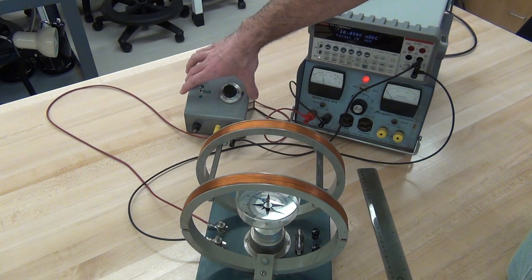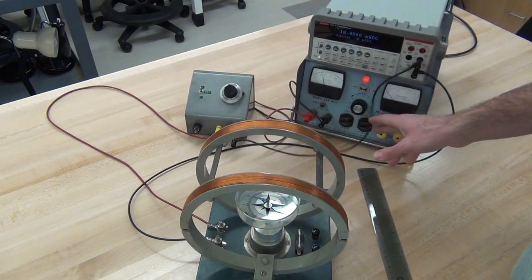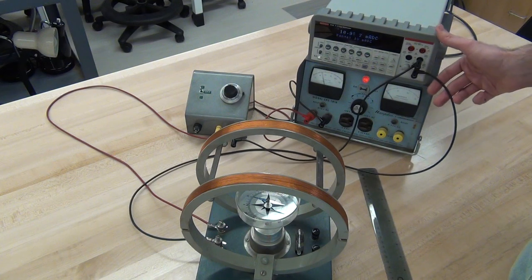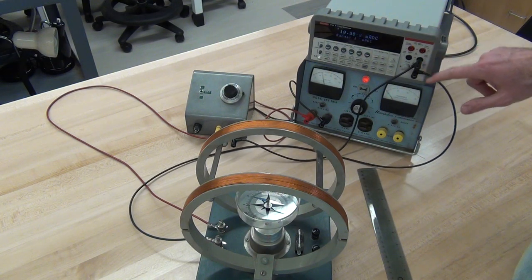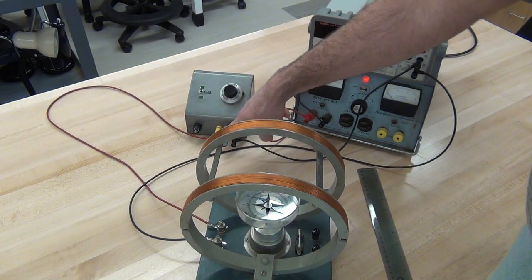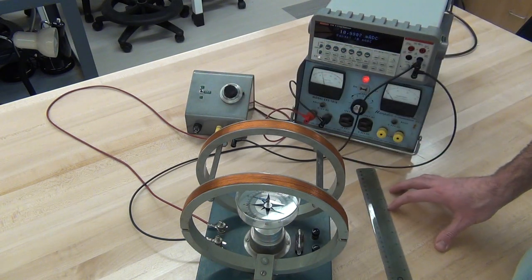From the voltage divider box, we're going to the Keithley, in at ground, out at current, into the coil, out from the coil, and back. There's our complete circuit.